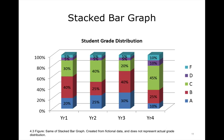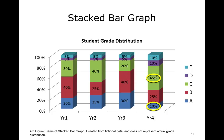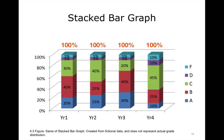The stacked bar graph shown here uses false data looking at student grade distribution. Between year 1, year 2, and year 3, you can see A's were steadily increasing. Then in year 4, there was an immediate and telling decrease, while C's really increased. Stacked bar graphs are nice when you can categorize your data and each category equals 100% — in this case, 100% of the students.